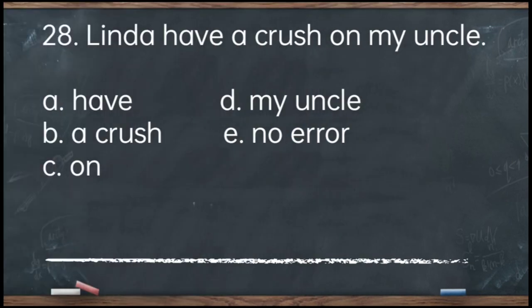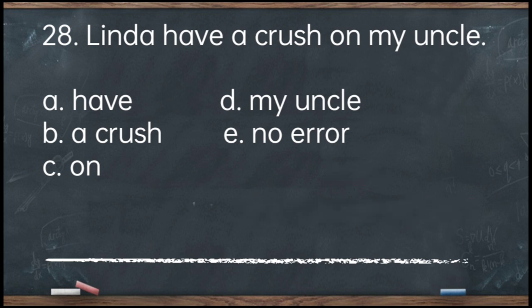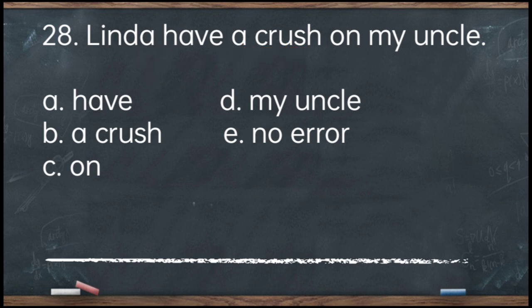Number 28. Linda have a crush on my uncle. A. Have. B. A crush. C. On. D. My uncle. E. No error. The answer is letter A — 'have.' Have is used for I, you, we, they, and plural subjects. Linda is singular, so we use 'has.' Corrected: Linda has a crush on my uncle.